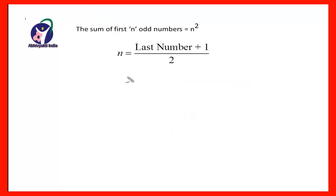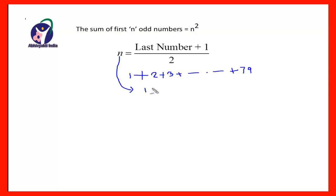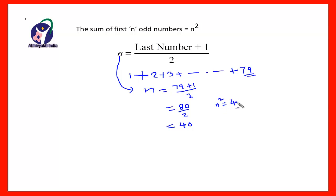Now if you have to find the sum of the odd numbers from 1 to 80, it will be 1 + 3 + 5 + ... + 79, because 80 is an even number. First we find n: n = (79 + 1) / 2 = 80 / 2 = 40. Therefore n² = 40² = 1600. The sum of the odd numbers from 1 to 80 is 1600.